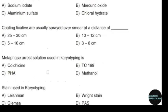Chemical ripening agent used in Harris hematoxylin. Correct answer: option A — Sodium iodate. Coating fixative are usually sprayed over smear at a distance of. Correct answer: option A — 25 to 30 cm.